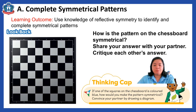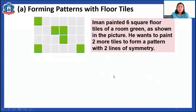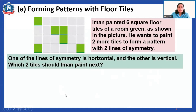I have here some patterns. Iman painted six square floor tiles of a room green, as shown in the picture. He wants to paint two more tiles to form a pattern with two lines of symmetry — one horizontal and one vertical. Which two tiles should Iman paint next?